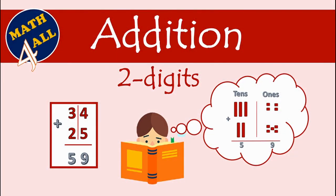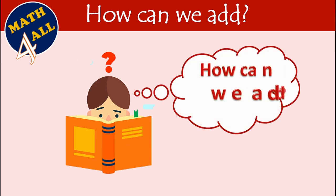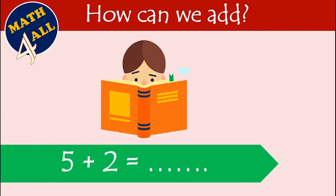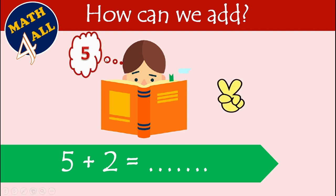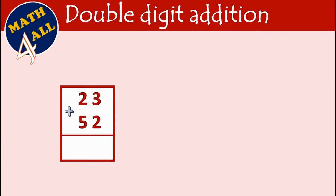To learn double digit addition, we first need to know how to add single digits. If we have five plus two, put the big number in your mind and open the smallest number on your fingers. Five in your mind, open two on your fingers, then count on after the bigger number: six, seven. So five plus two equals seven.